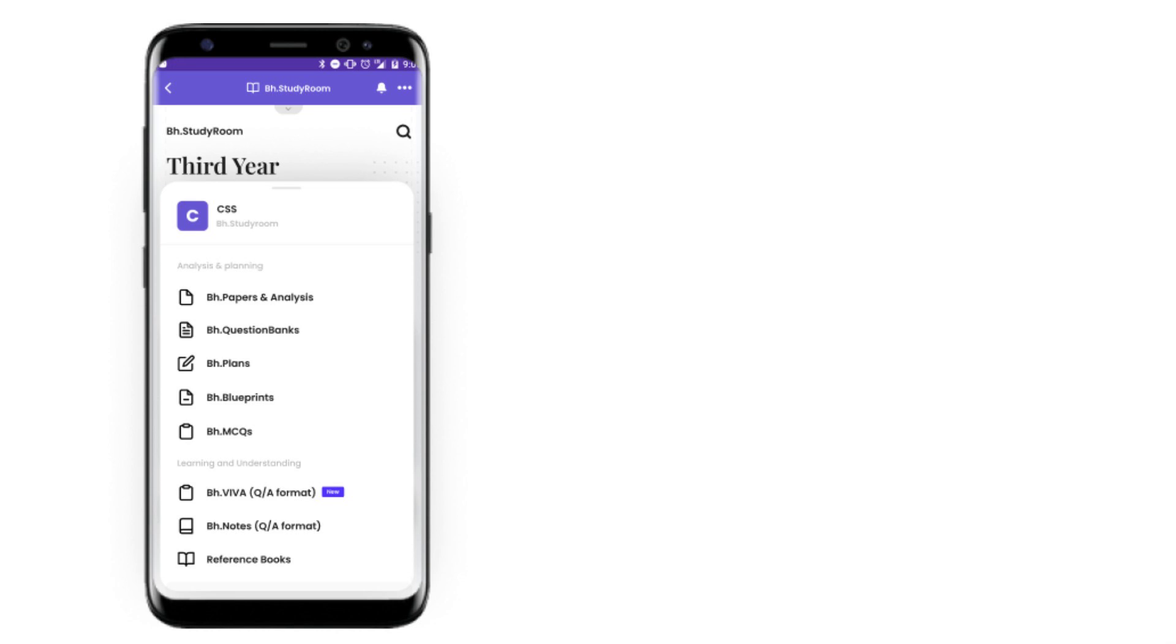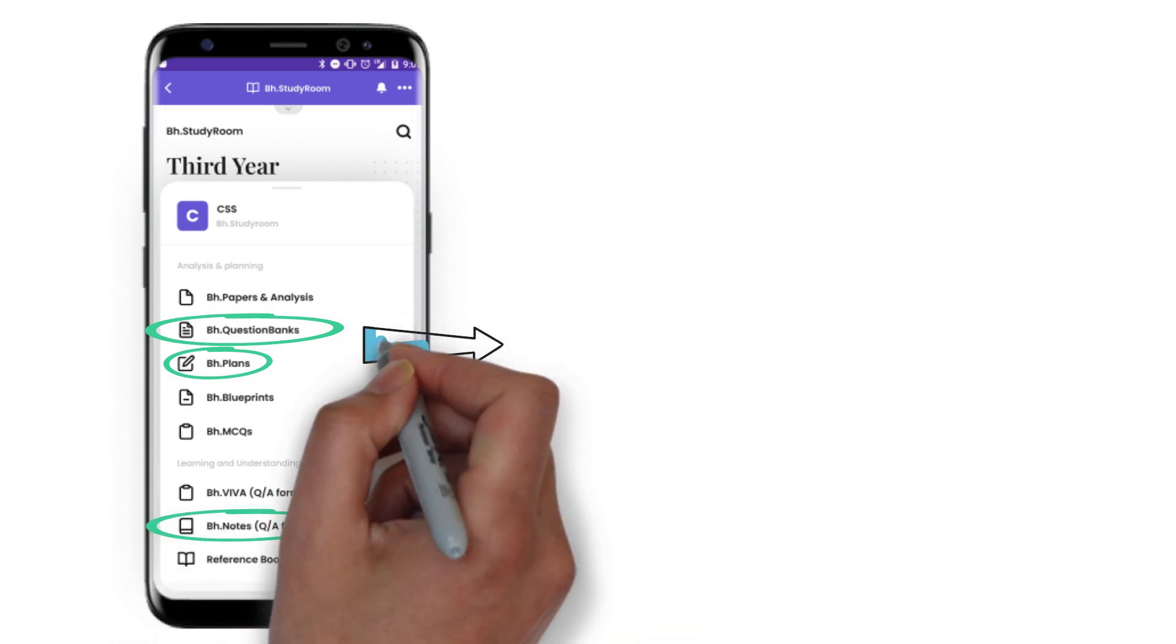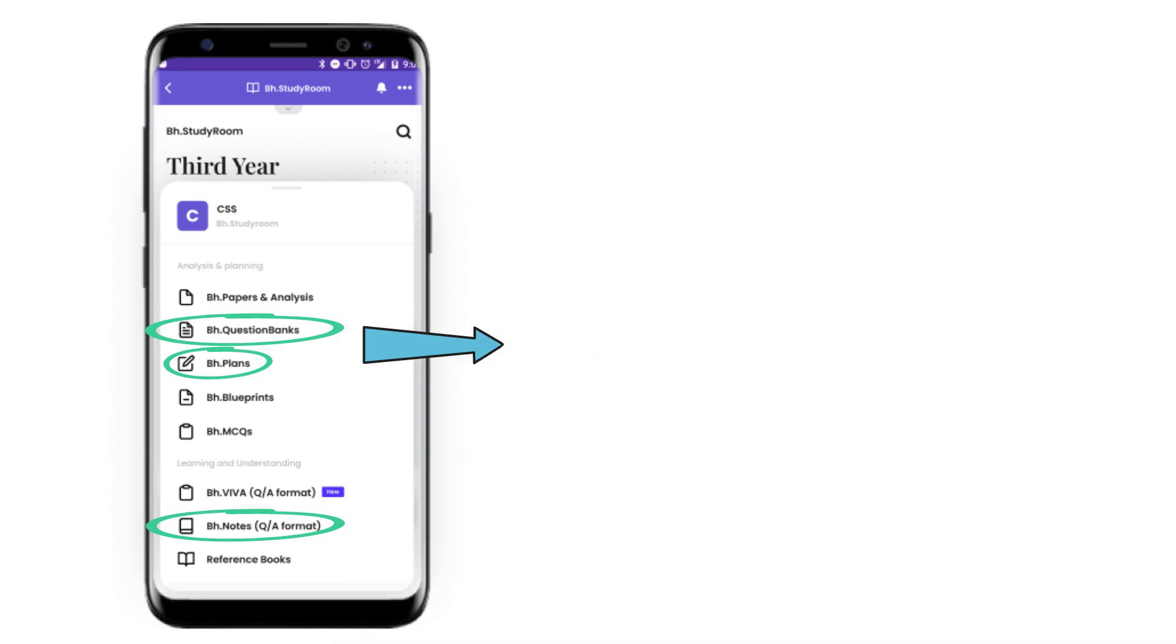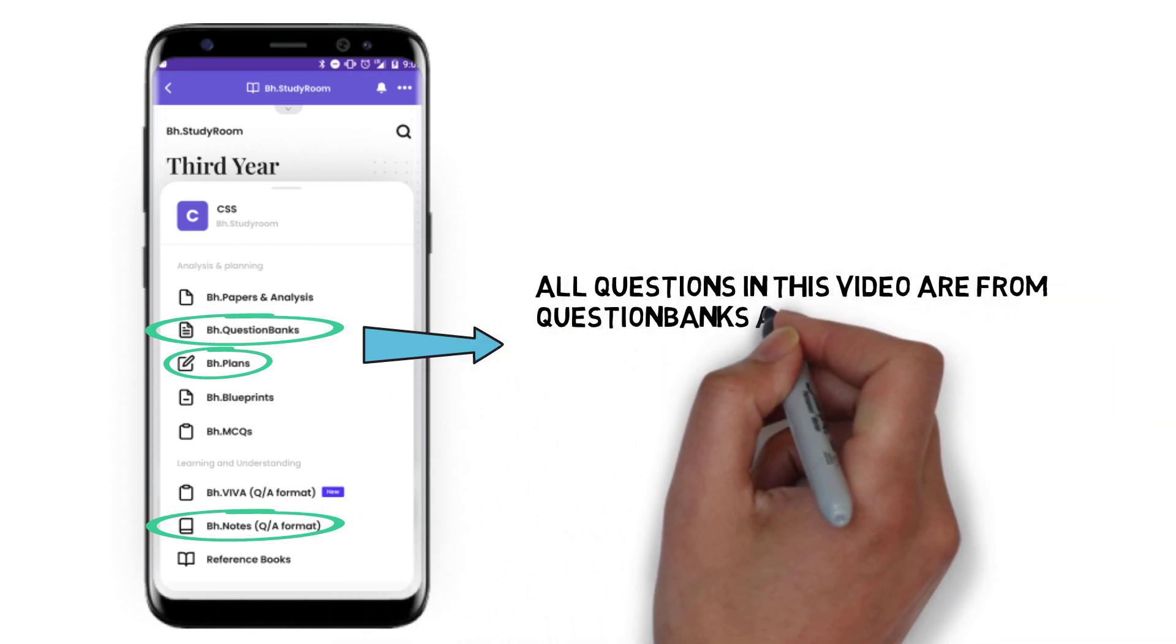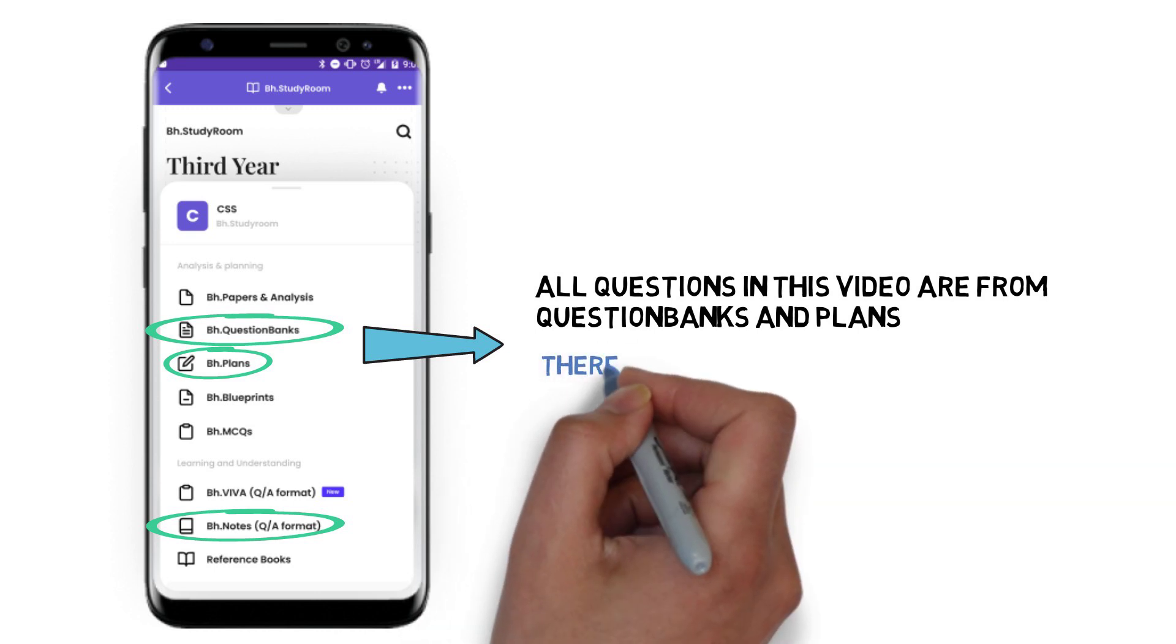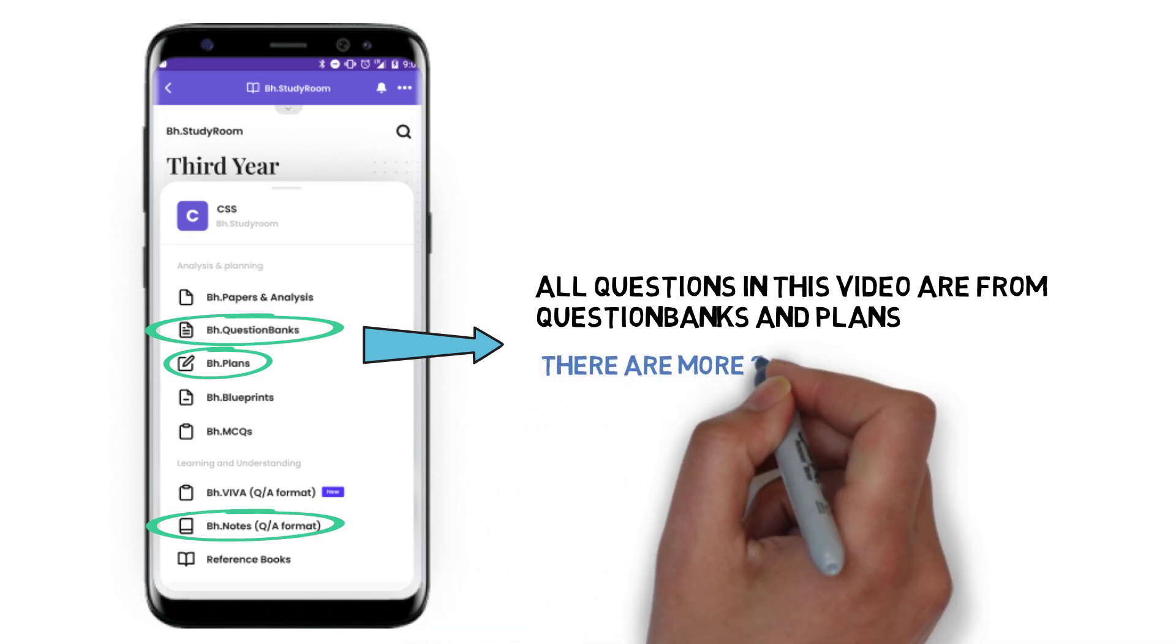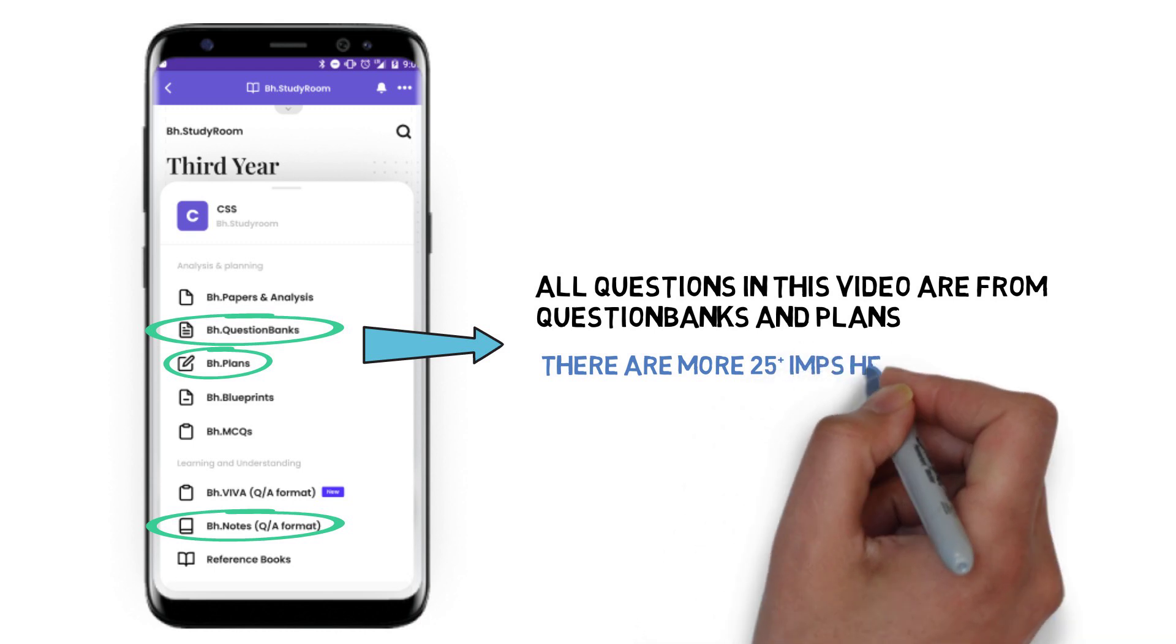If you want to score average or maybe good, then what you need to do is go to BH Plans and cover all the questions mentioned in the question list. We've already added BH Plans for you, module-wise questions, BH question banks, and all the solutions to these questions are available in the BH notes.